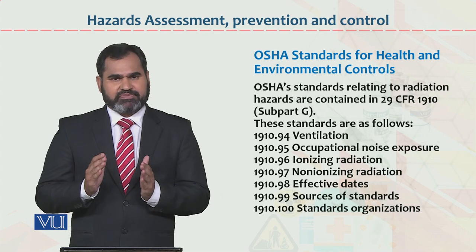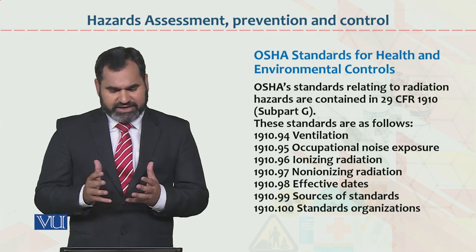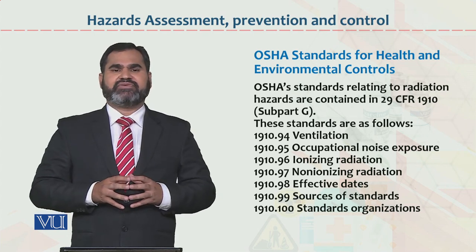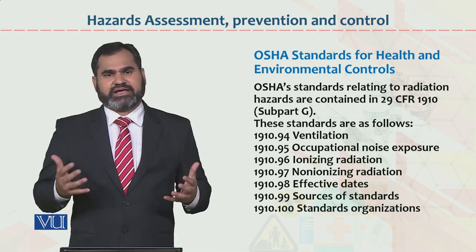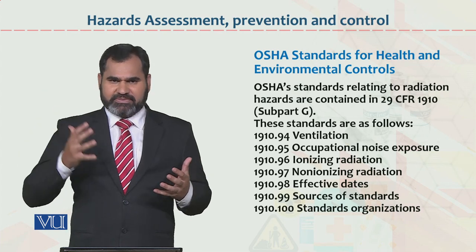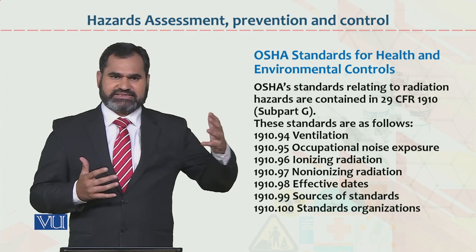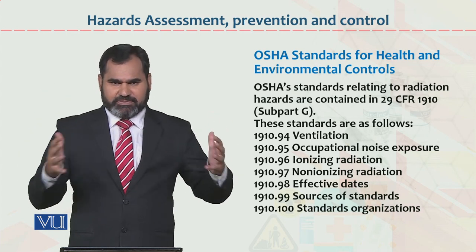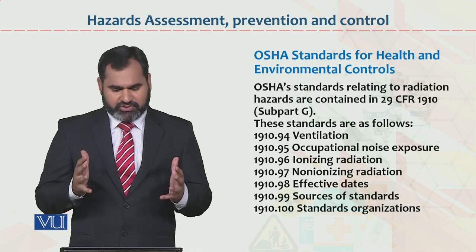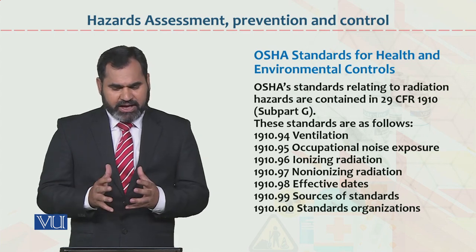1910.94 — Ventilation. یہ پہلا standard ventilation کو deal کر رہا ہے کہ جو ہوا کا کمرے میں آنا، وہاں سے جانا، پھر اس کے مکمل گزر ہونا — یہ ventilation system proper ہونا چاہیے. (This first standard deals with ventilation — the proper flow of air into and out of a room — the ventilation system must be proper.)